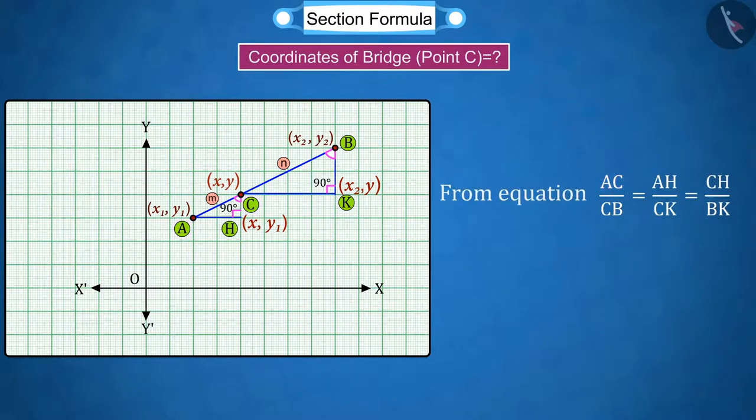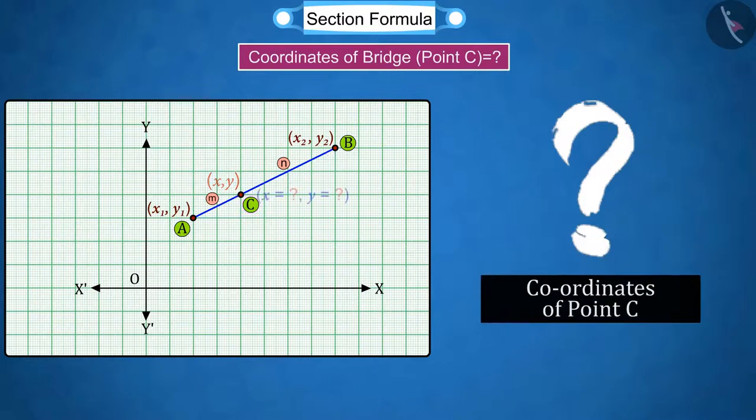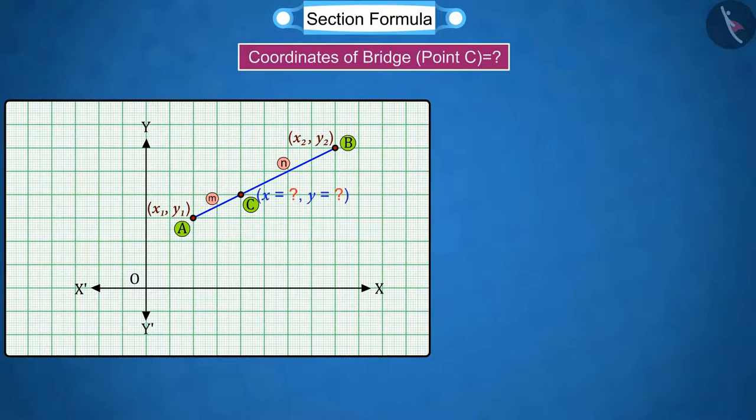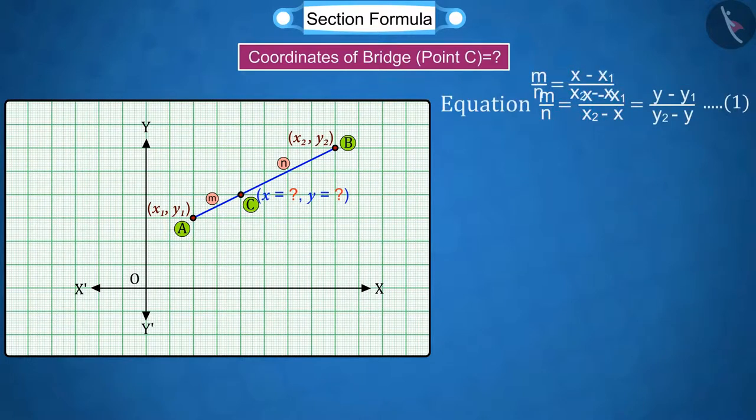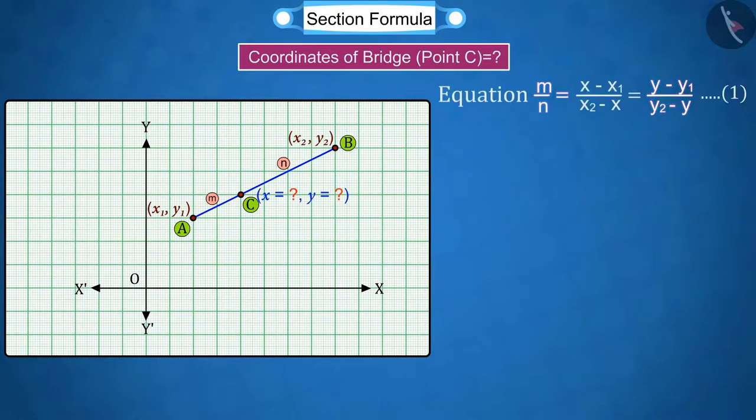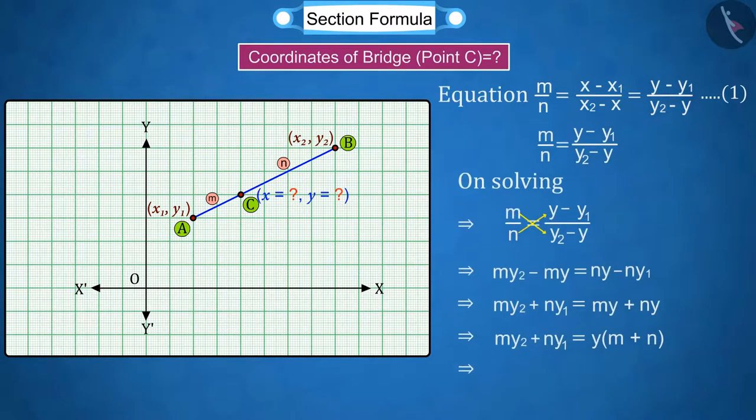Put the values of AC, CB, AH, CK, CH and BK in equation 1, where the values of AC and CB are given to be M and N respectively. Now can you find the values of the coordinates X and Y of point C? Come on, let's try to find its solution. By comparing these two ratios of equation 1 and solving them, we get the value of X as MX2 plus NX1 upon M plus N. While comparing these two ratios and solving them, the value of Y is MY2 plus NY1 upon M plus N.